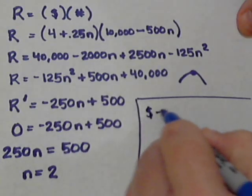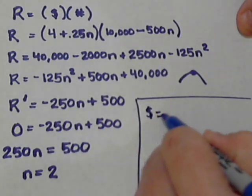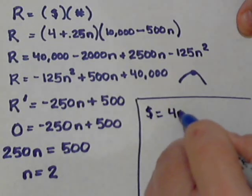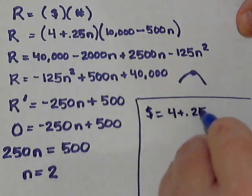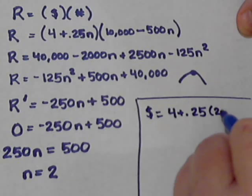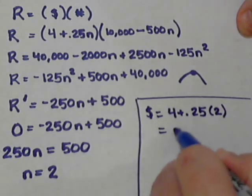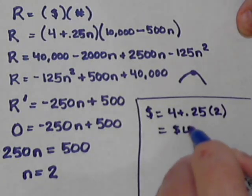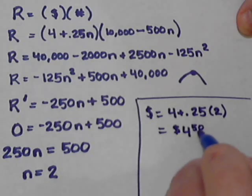So, the amount we need to charge will be 4 plus 0.25n or 2. And that comes out to be a price of $4.50.